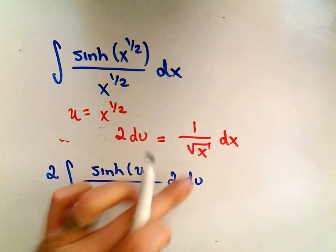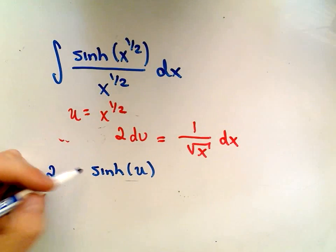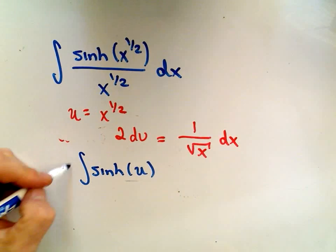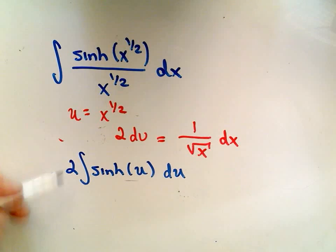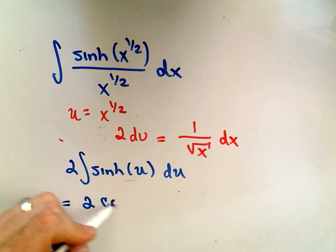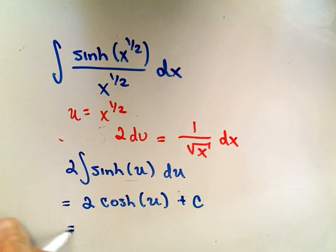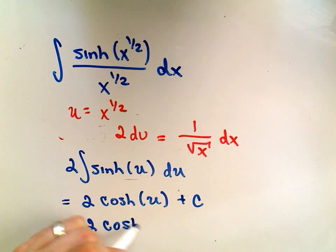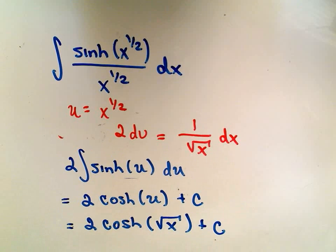So we're simply going to be left with hyperbolic sine of u times two du. We can pull this two out front. We're just integrating hyperbolic sine u du. If we integrate hyperbolic sine, we saw that's hyperbolic cosine of u plus c. Now we just have to plug back in our value for u. u is just x to the one-half, or square root of x, and that will be our antiderivative.